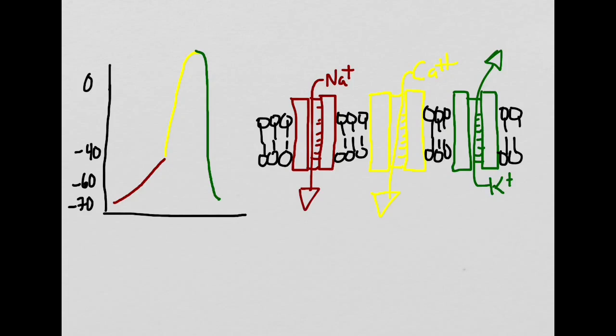This is repolarization. At this certain voltage the funny sodium channels will open up again and the sodium will leak into the membrane causing that slow rising until we hit the calcium threshold again.